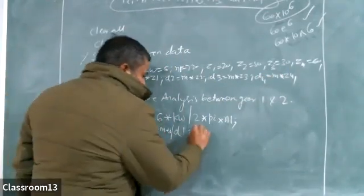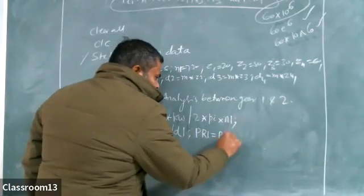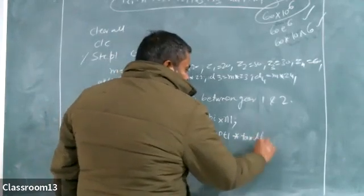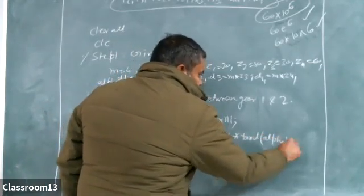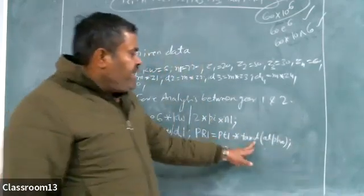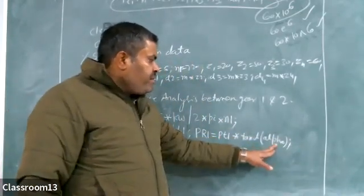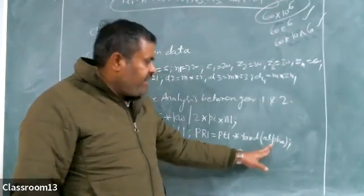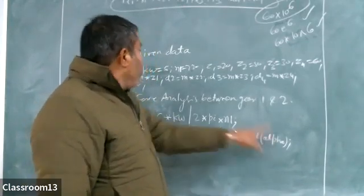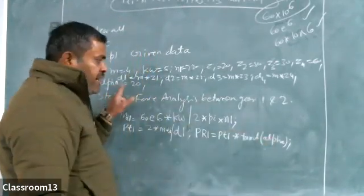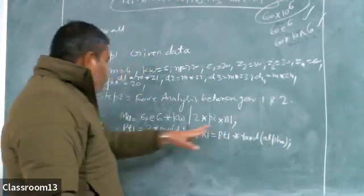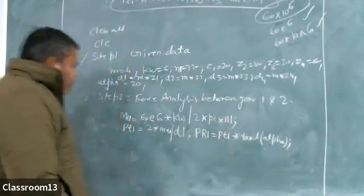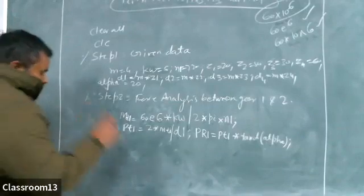When Pt1 is known, PR1 can be found: PR1 = Pt1 × tan(alpha). I have used tand here because the angle is in degrees, so I use tand in place of tan. Alpha is 20 degrees, already defined. Pt1 is picked from the previous line. So there is no problem in PR1. PR1 part is over.